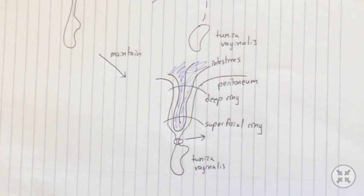The direct is commonly acquired. So you get it during life from activity, etc. The indirect is frequently congenital because of this patent processus vaginalis. And the indirect is more common. It's about two-thirds of the time versus the direct, which is typically only one-third of the time. Thanks for listening.